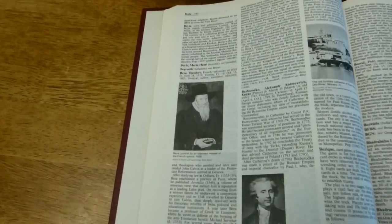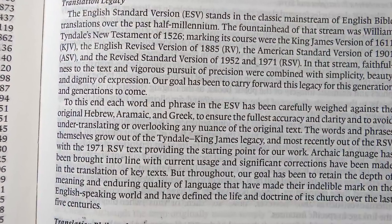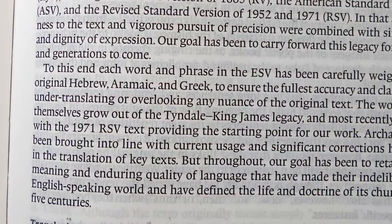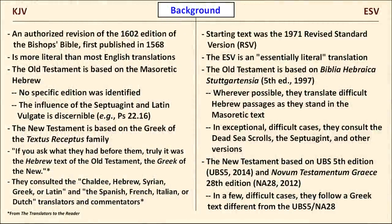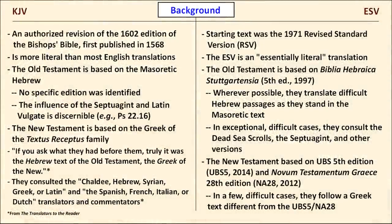Scrivener used Theodore Beza's 1598 edition as his base text. The ESV is a revision of the 1971 edition of the Revised Standard Version, and it is the work of evangelical scholars. The ESV's Old Testament is based on recent editions of the Masoretic Text, but it makes use of the Dead Sea Scrolls and ancient versions where needed. Like the KJV, the ESV's New Testament is based on a printed edition of the Greek New Testament — a more modern one, the Greek text found in both the Nestle-Aland 28th edition and the United Bible Society's 5th edition, or NA28 and UBS5.